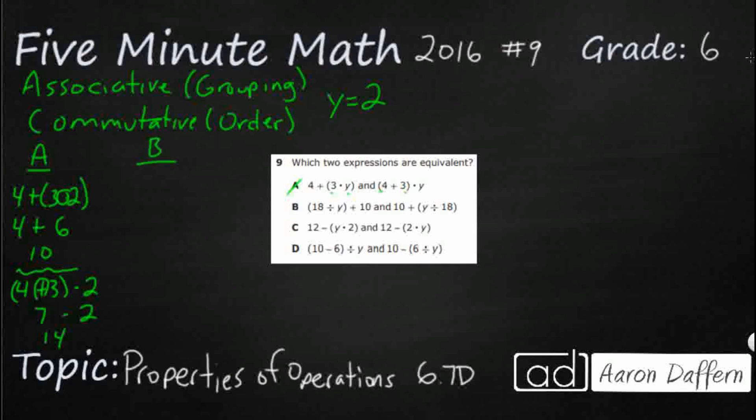Let's look at B. So we've got 18 divided by y is going to equal 2 plus 10. So 18 divided by 2, that is going to make 9 plus 10. So that makes 19. We'll see what the other one looks like.